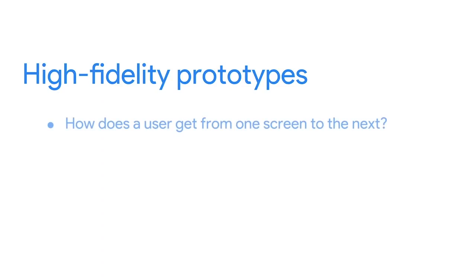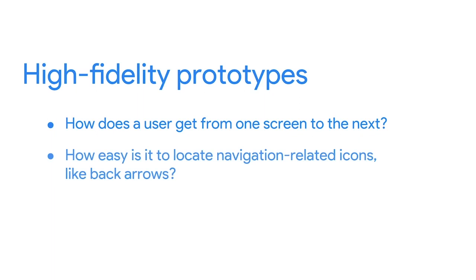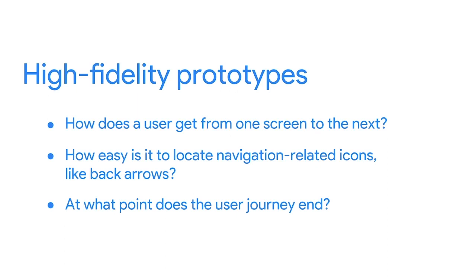When checking the navigation in a high-fidelity prototype, ask yourself these questions: How does the user get from one screen to the next? How easy is it to locate navigation-related icons, like back arrows? And at what point does a user journey end?